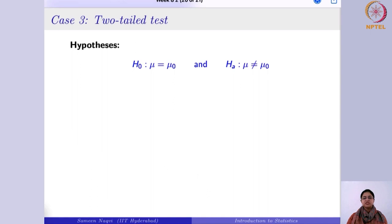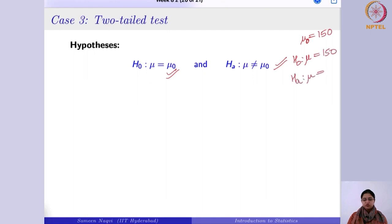Finally, the two-tailed test. Two-tailed means the alternative can go in either direction — less than or greater than μ₀. When the alternative is two-tailed, the null is that the mean equals μ₀. For example, if someone claims the average height is not 150, the null is μ = 150 against the alternative μ ≠ 150. The choice of test depends on the problem: right-tail for greater than, left-tail for less than, two-tailed for not equal.